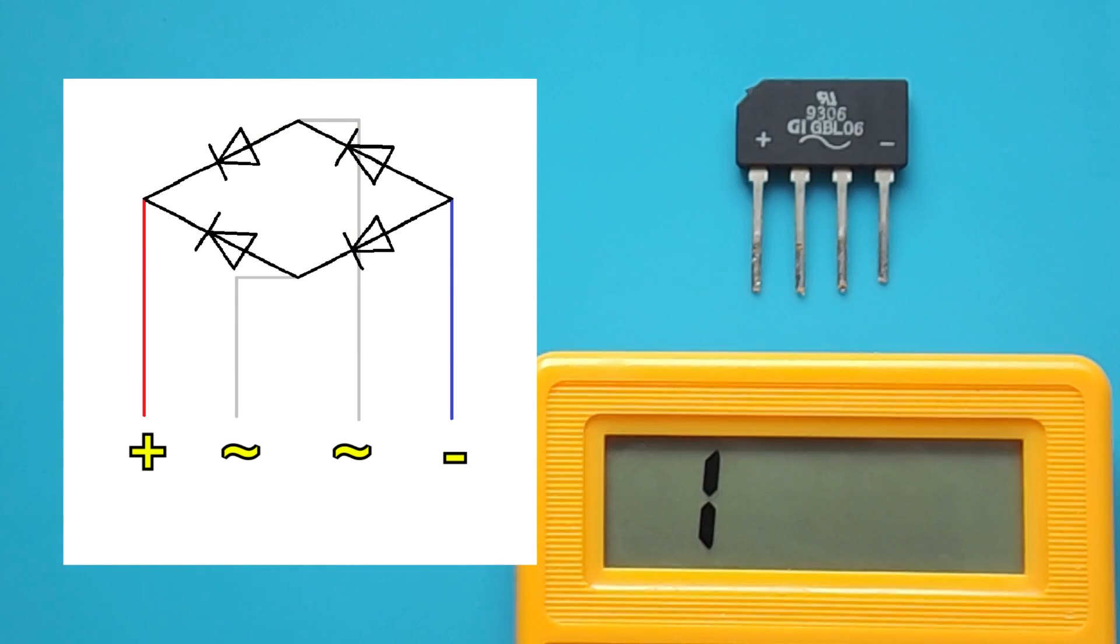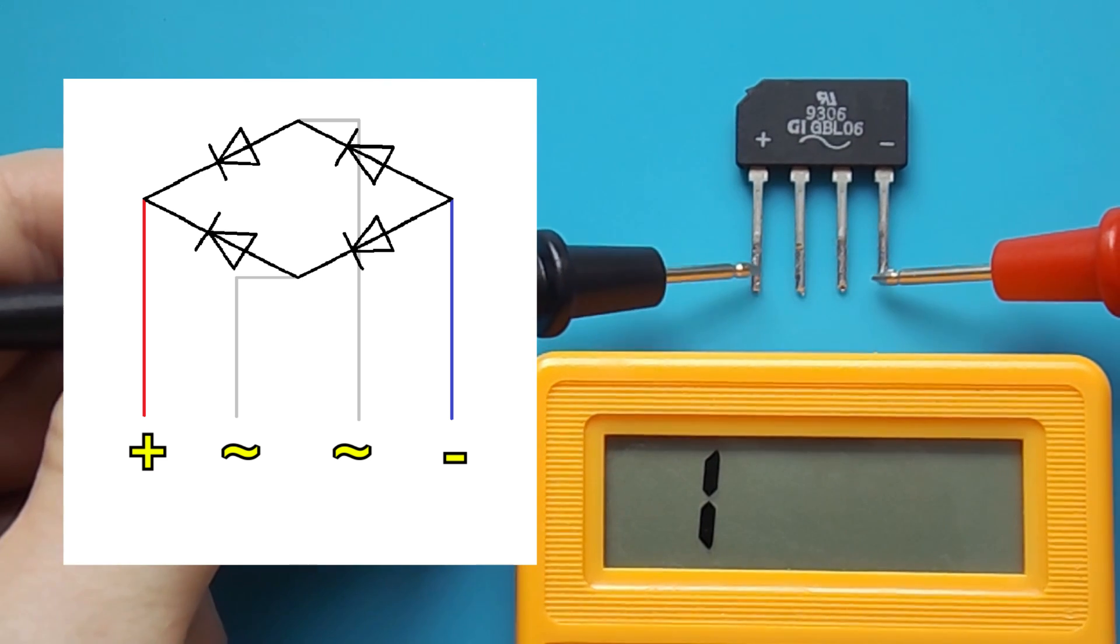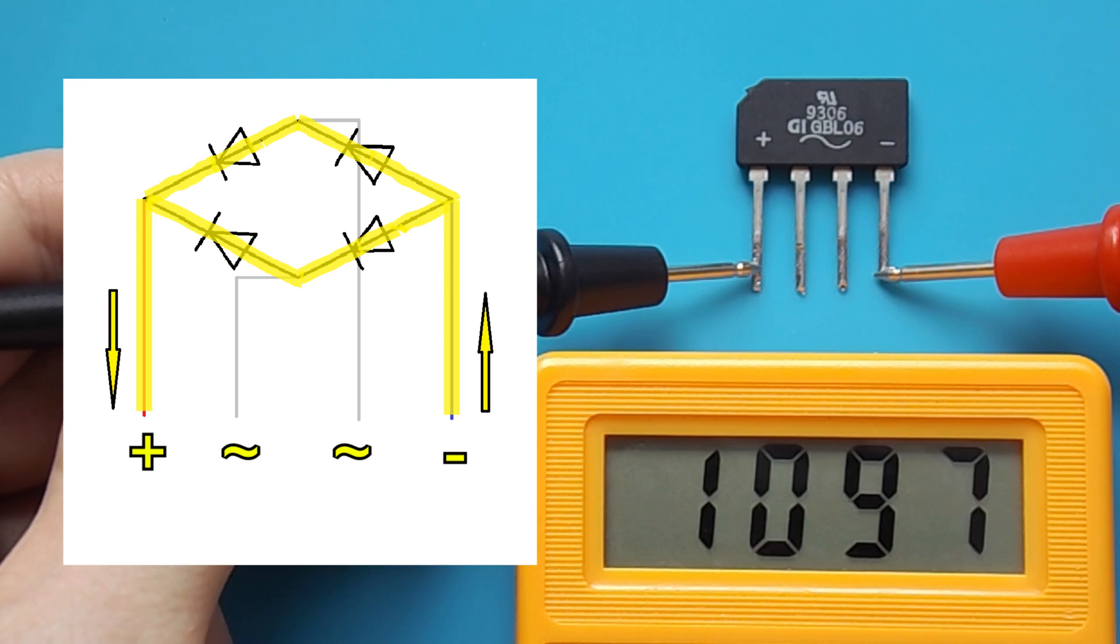To make it more convenient to work further, the probes in the hands must be swapped. Then I put the black probe to the plus and the red one to the minus. The multimeter will show such a large number. This is twice the voltage drop across two diodes connected in series.